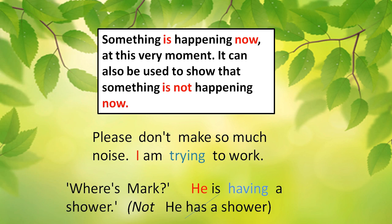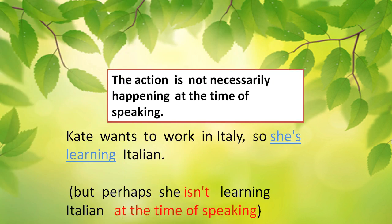We use the present continuous to talk about something that is happening now, at this very moment. It can also be used to show that something is not happening now — for example: 'Please don't make so much noise, I'm trying to work.' Also: 'Where is Mark? He's having a shower.' Not 'he has a shower,' because he is actually in the bathroom having a shower right now.